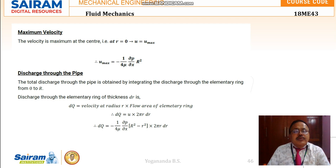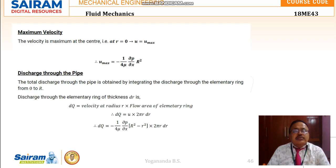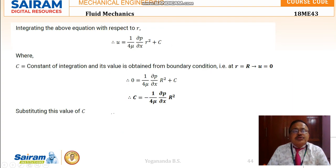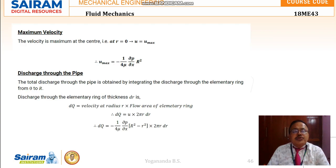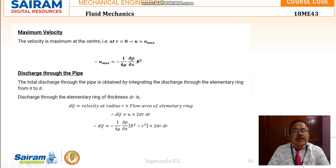For maximum velocity, we take the velocity equation and set r = 0, that is exactly at the center of the pipe. When r = 0, r² becomes 0, leaving only capital R². So u_max = -(1 / 4mu) · (del P / del X) · R².